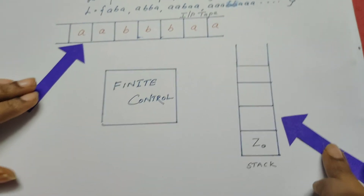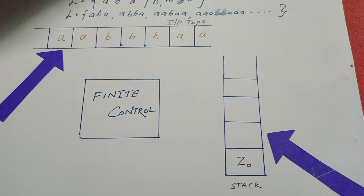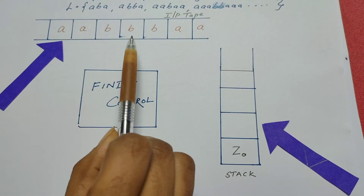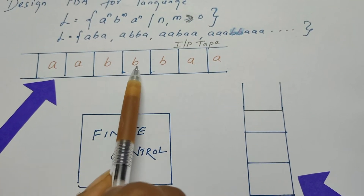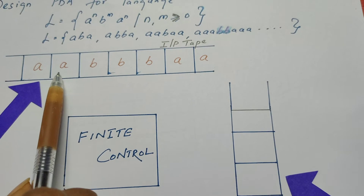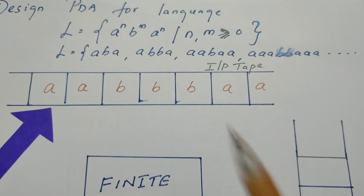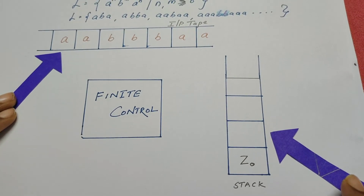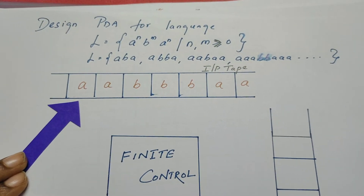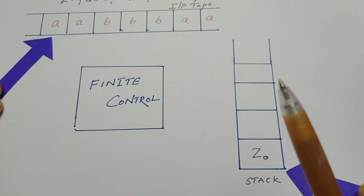I am going to make a small demo. Those who do not know what is pushdown automata, please look into the introductory video on pushdown automata. In the input tape there is a string which belongs to the language: a a b b b a a — two a's followed by three b's followed by two more a's. There is a read-write head pointing to the first character, and a top pointer pointing to an empty stack.